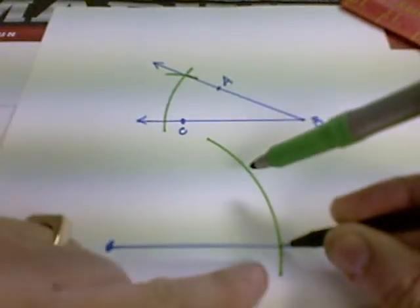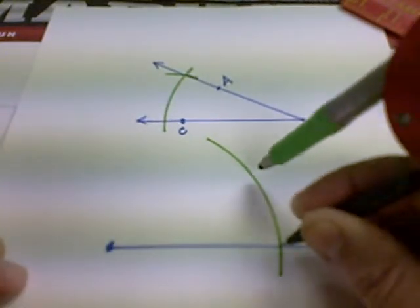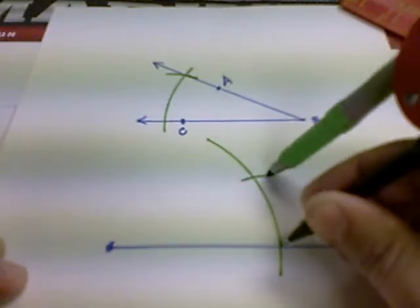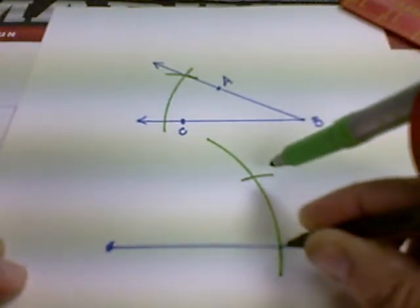We'll bring the compass to our intersection of our ray and our arc, and measure that distance along the arc using the compass.